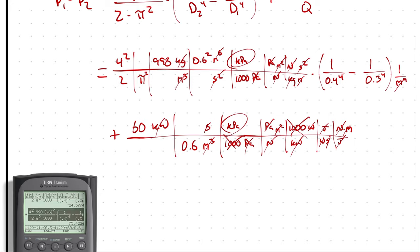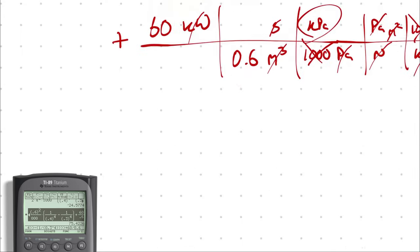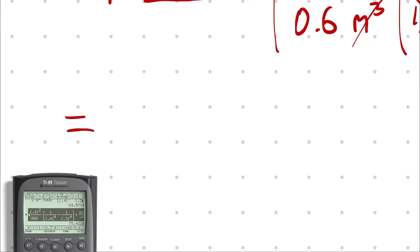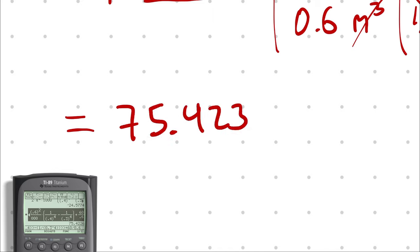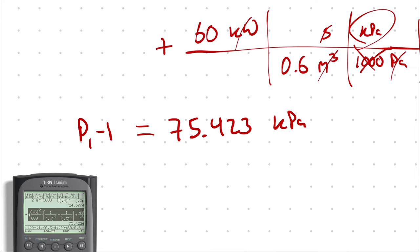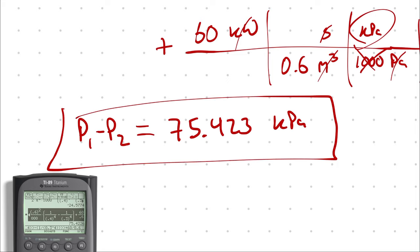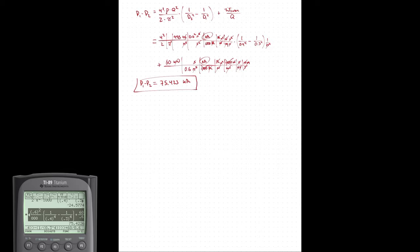Let's double check: 4-squared, 998, 0.6-squared divided by 2 times pi-squared times 1000 — we get 75.423. That's a quantity in kilopascals representing the difference in pressure between states one and two, which is the pressure drop. And with that, we are done with this problem.